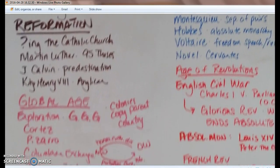The Reformation is when people begin to question the Catholic Church. Martin Luther is the leader of this — he wrote the 95 Theses. John Calvin is also super important. Both of these guys are saying that the Bible is the ultimate authority, not the Pope. Both of them are against indulgences, especially Martin Luther — remember, that's when you pay to not have to go to purgatory.